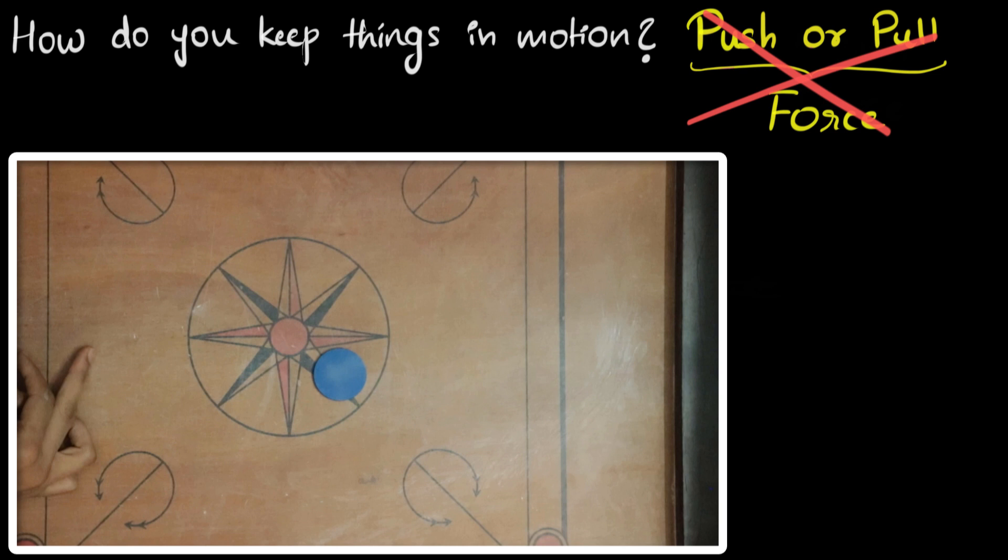Let's look at that again, this time in slow motion. What we see is when our finger touches that striker, it pushes that striker, making it move.